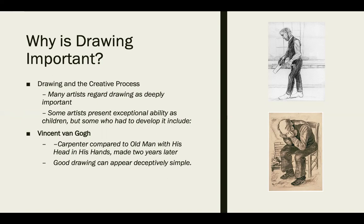Looking at Van Gogh's journey: the first drawing shown is 'Carpenter,' compared to 'Old Man with His Head in His Hands' — two drawings two years apart. You can see a lot of strides between them. In the first, scale and proportion are awkward — the legs are much shorter than they should be, the torso and arms a little longer. This naturally happens when you start drawing and don't know how to correctly draw human proportions.